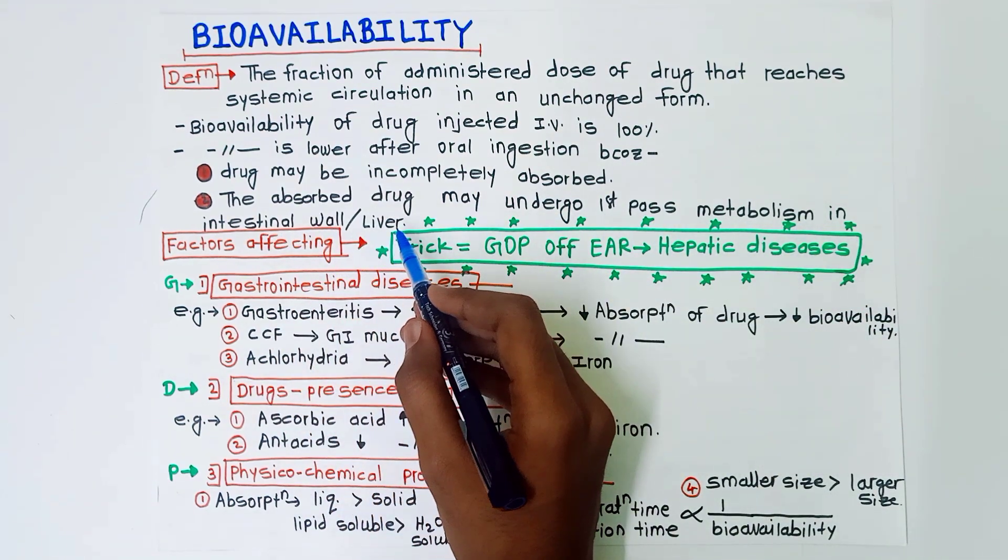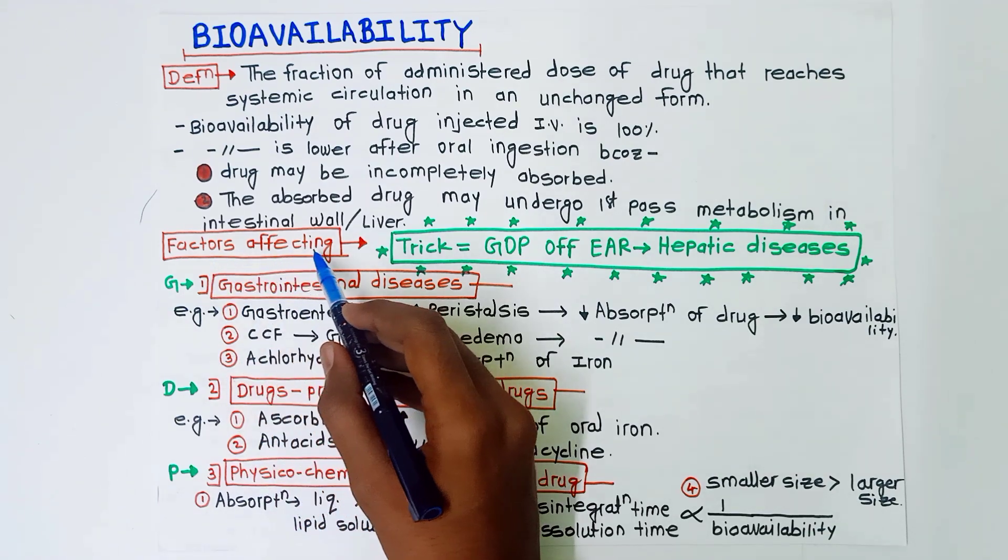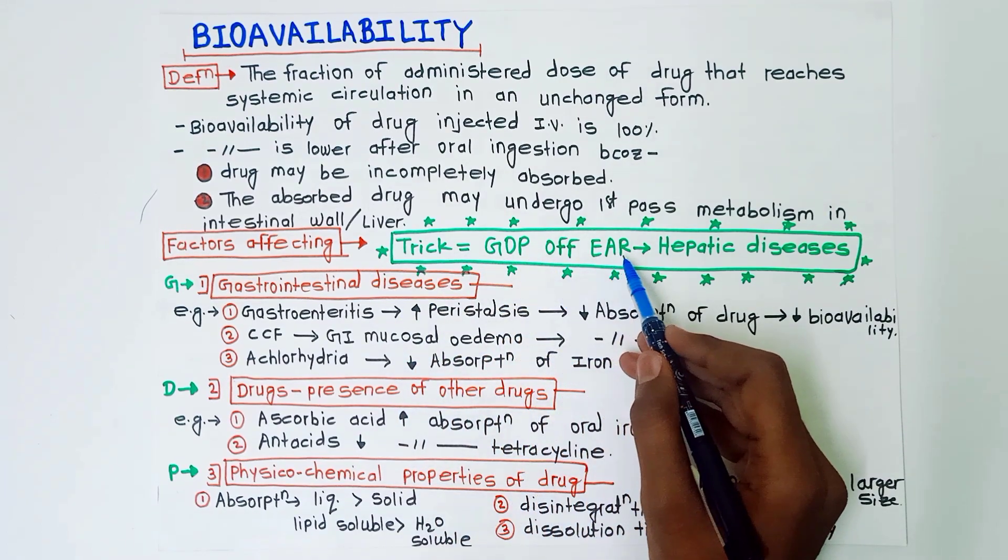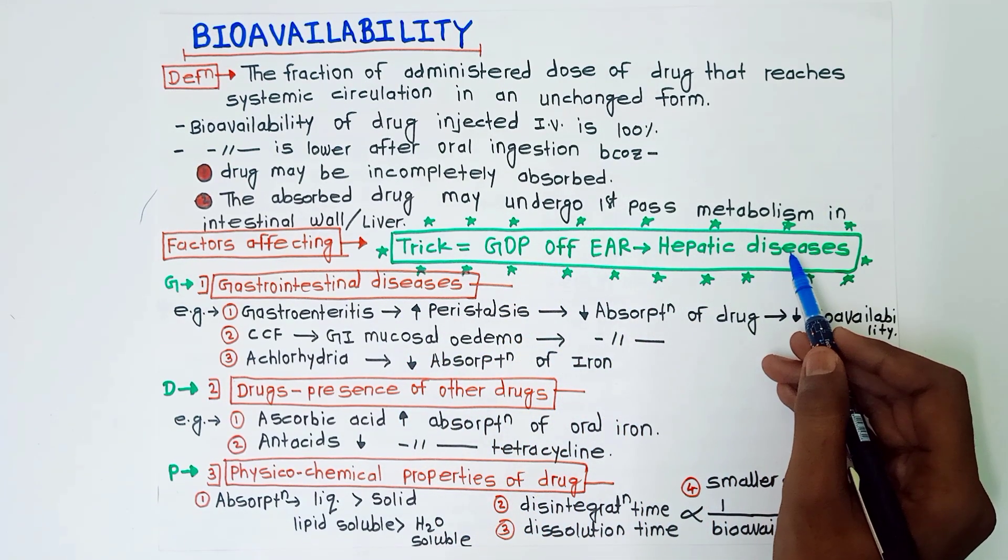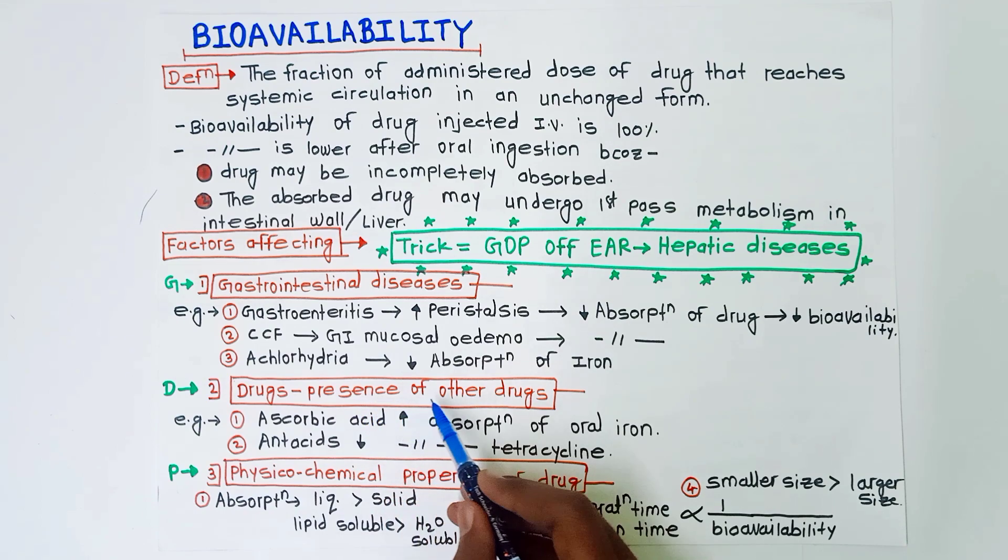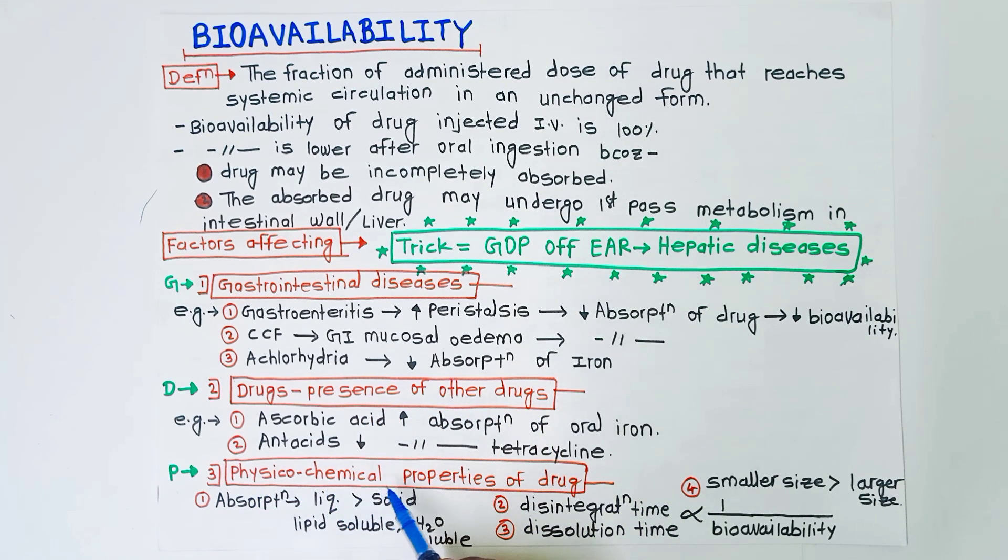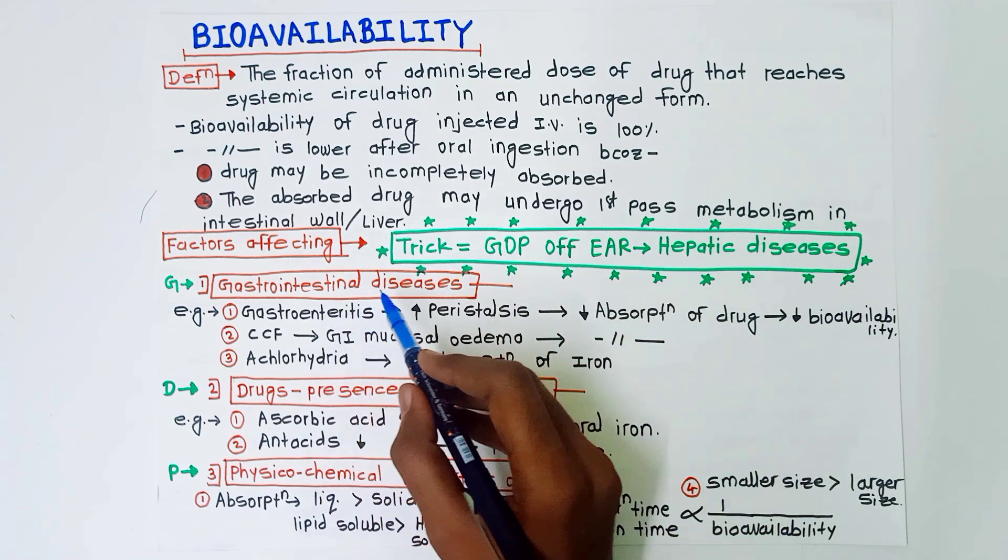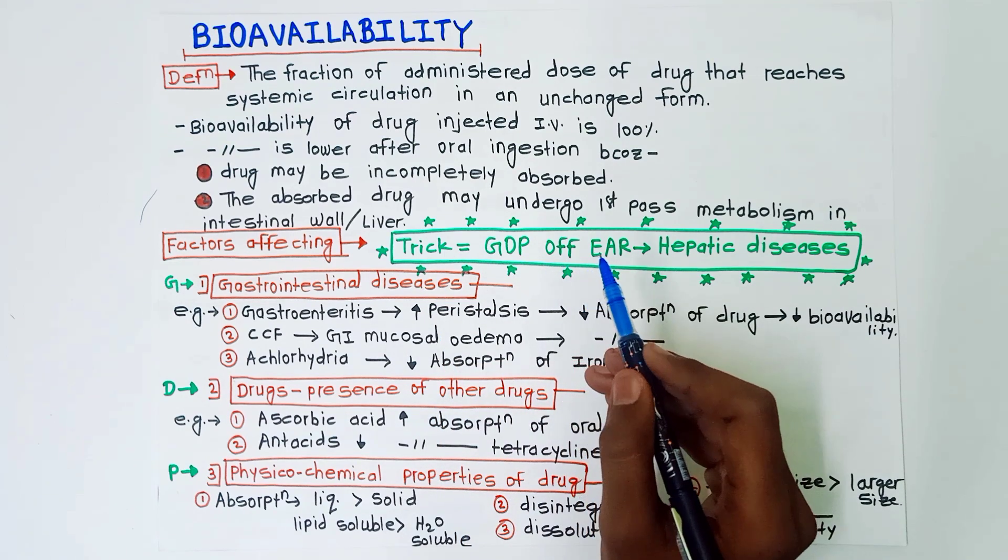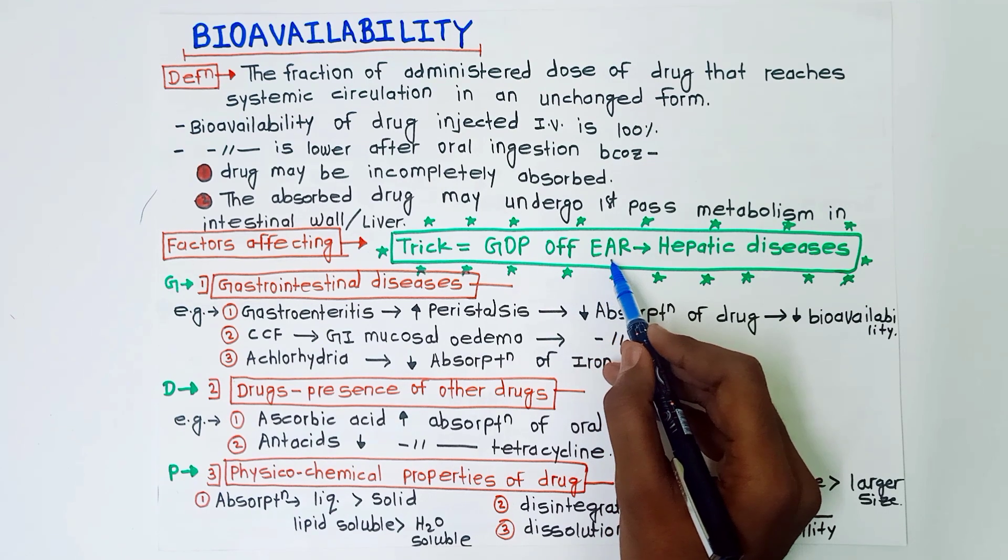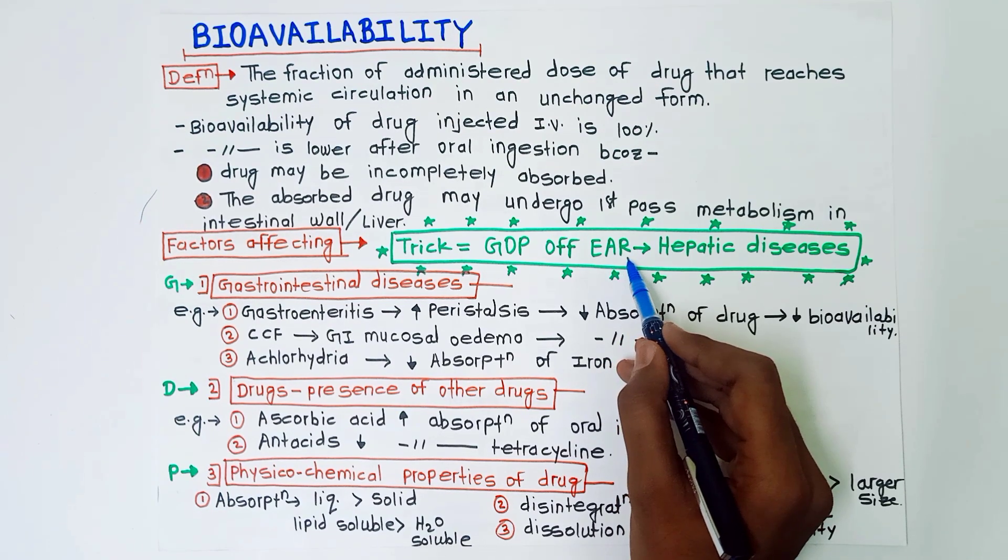Next point is factors affecting. The trick to remember these factors affecting is GDP off EAR - hepatic diseases. So G for gastrointestinal diseases, D for drugs that is presence of other drugs, P for physical chemical properties of drug, F for presence of food, next F for first-pass metabolism, E for enterohepatic cycling, A for area of absorption, and R for route of drug administration and hepatic diseases.